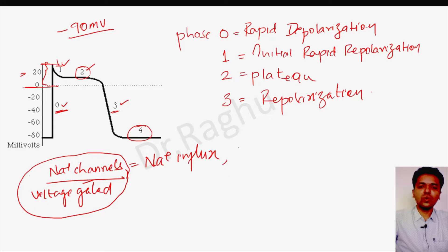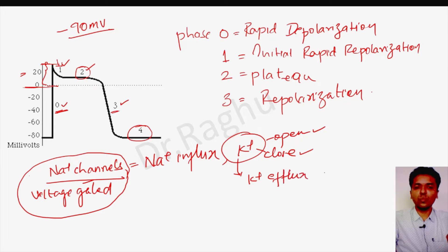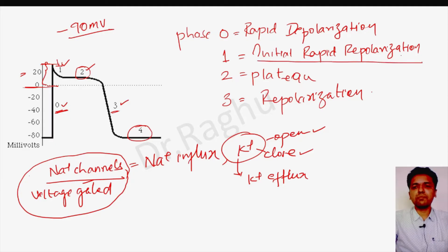After the sodium channels close, potassium channels open rapidly and then close rapidly. This rapid opening and closing of potassium channels causes potassium efflux for a very short duration of time, and this potassium efflux is responsible for the initial rapid repolarization phase — phase one.